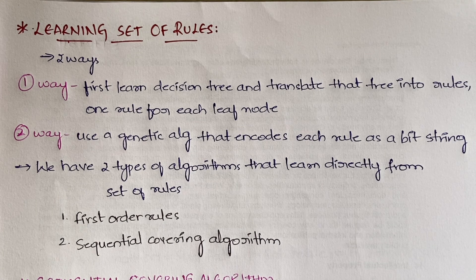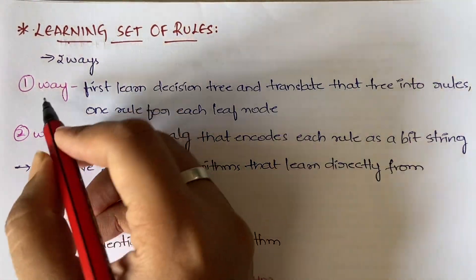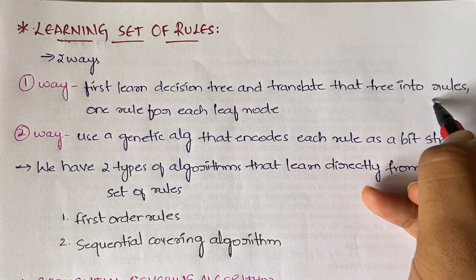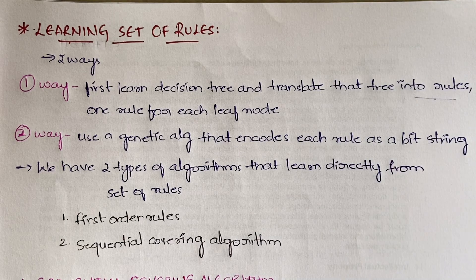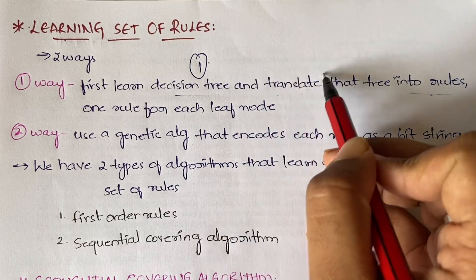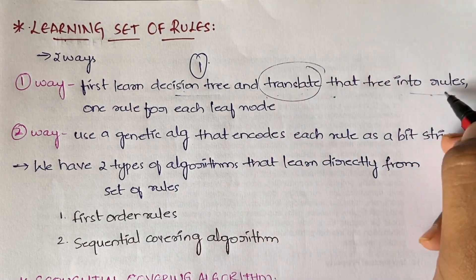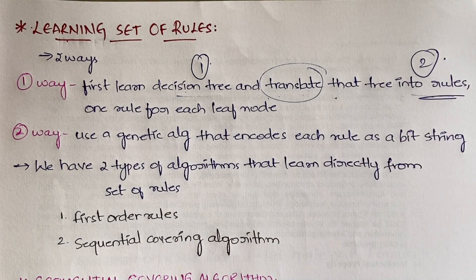When you're learning a set of rules, you have two ways to do it. The first way is to learn a decision tree and translate the tree into rules — one rule for each node. So for a problem, you first need to define and draw a decision tree, and then convert that decision tree into a set of rules.